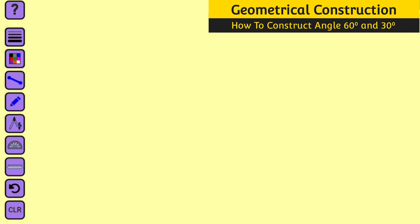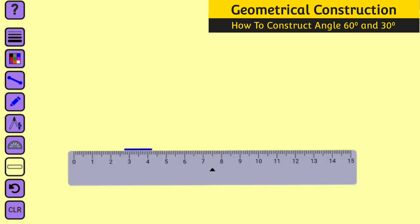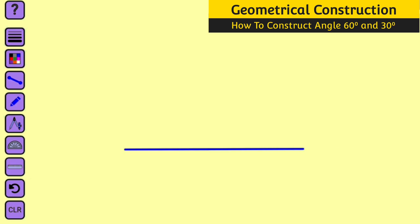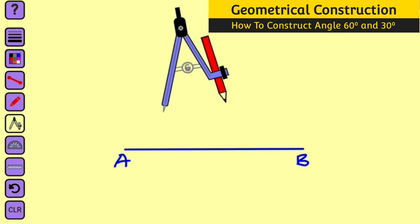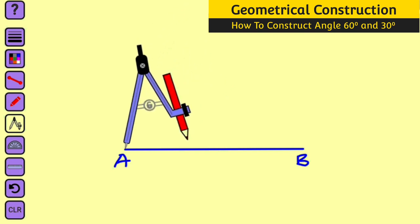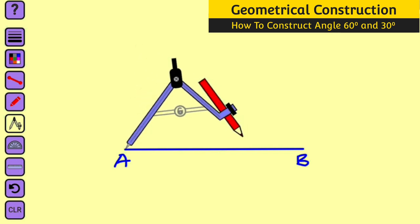The first thing we need to do is bring our ruler and construct a straight line. Label the line as point A and point B. Now bring your compass. Take it to either point A or point B depending on the direction you wish to construct the angle. Let me take it to point A — a convenient radius.